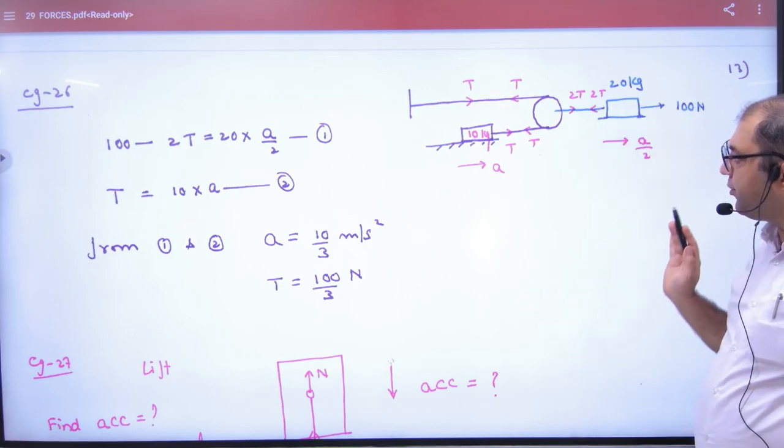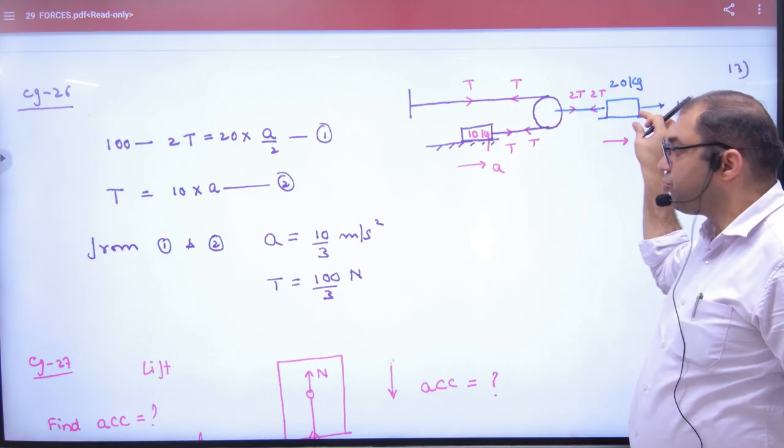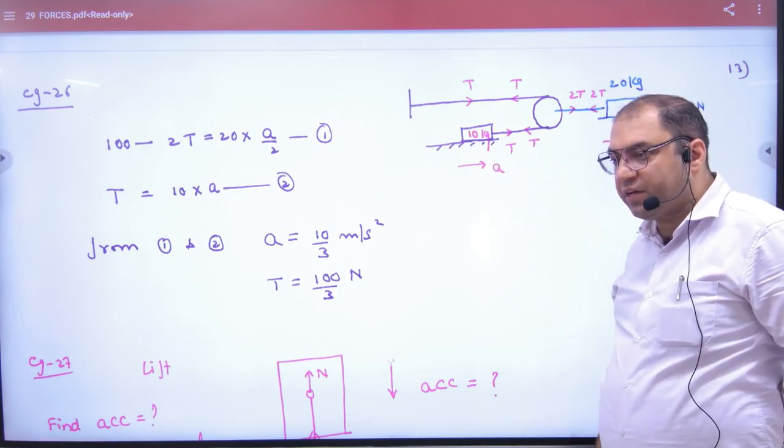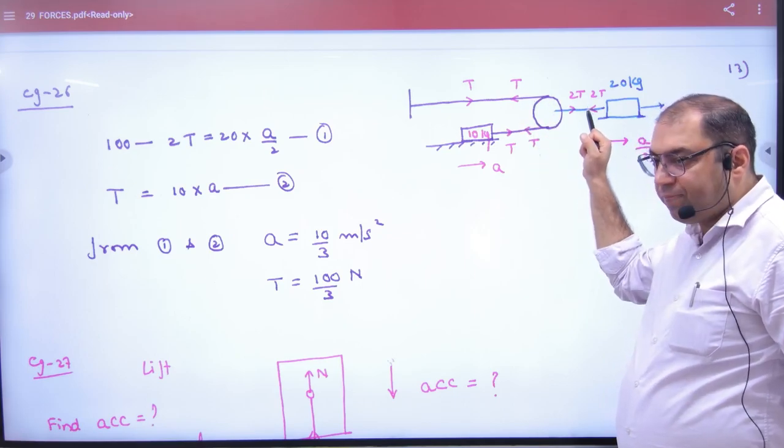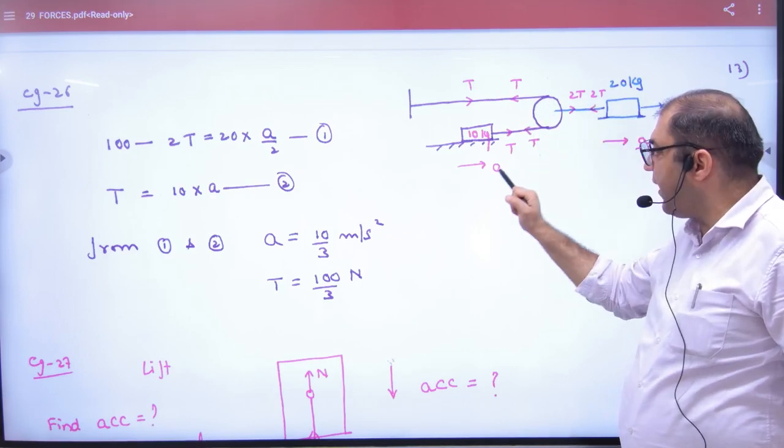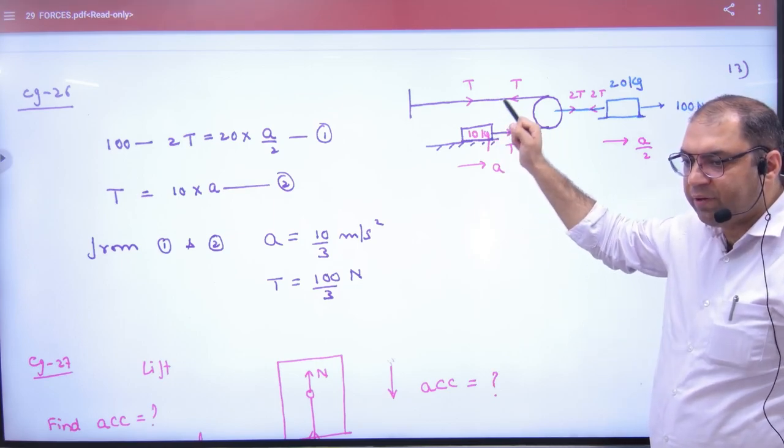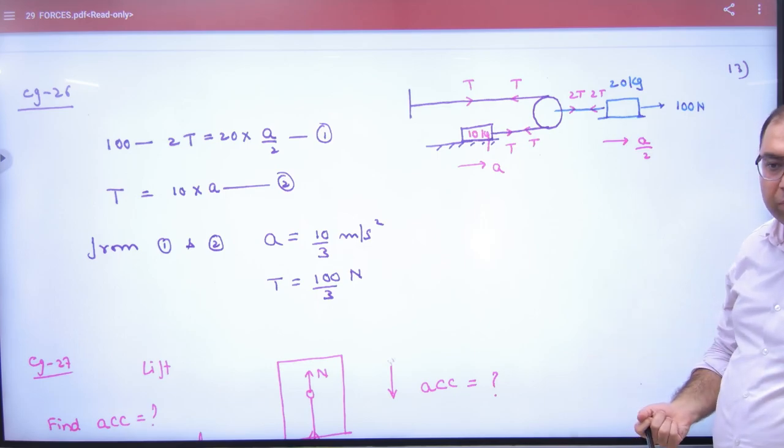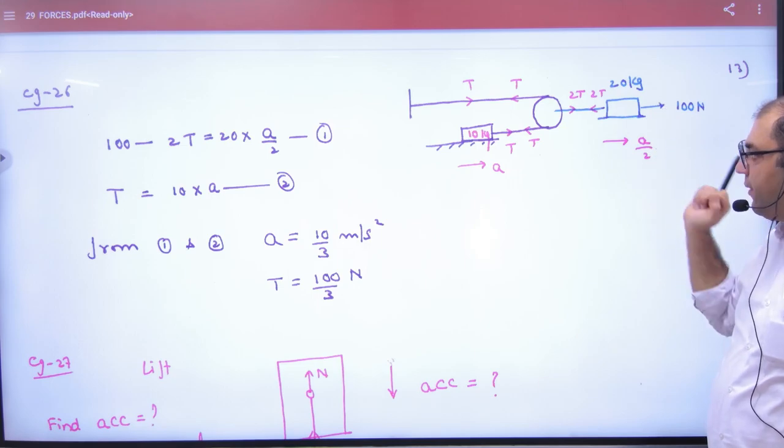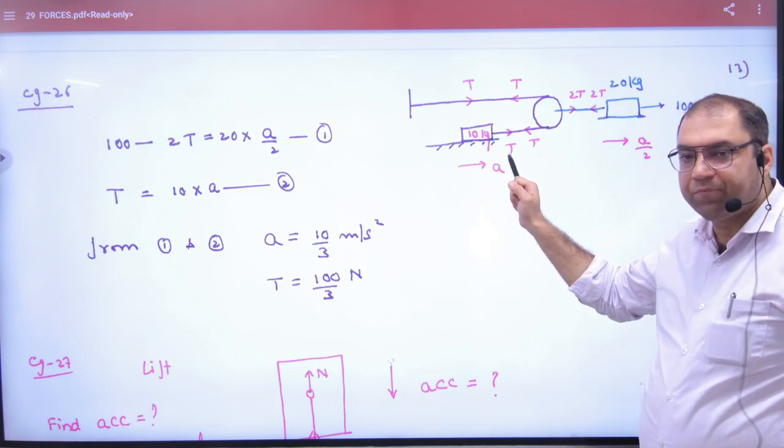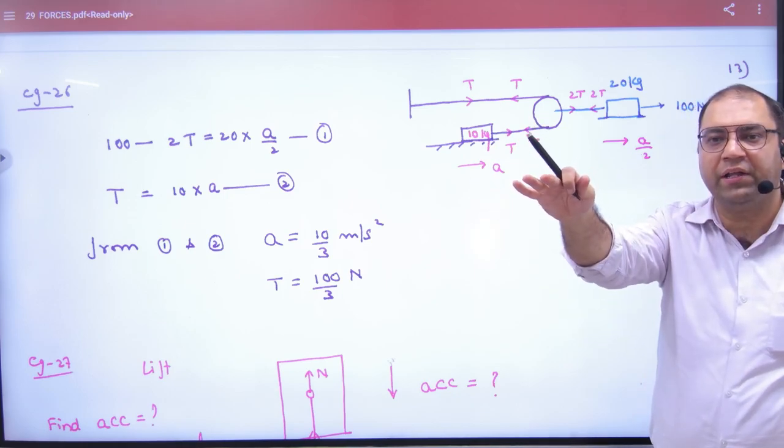So this force is hundred newton. Now what will be its equation? Because if this - if I choose here, this is fixed, so this block will have to move here with an acceleration of a. So this is a. So this is T, so this is 2T. Where tension is double, there acceleration is half. Do it like this - this is a, this is zero, so a plus zero by two equals a by two. So what will be the equation? Hundred minus 2T is twenty into a by two. Its equation will be T is ten into a. Solve both of these simultaneously and a and T can be calculated.